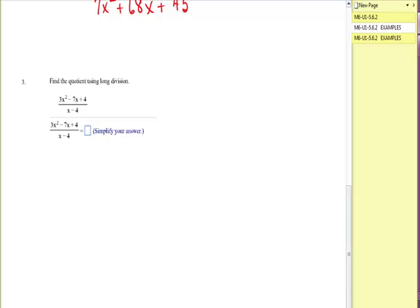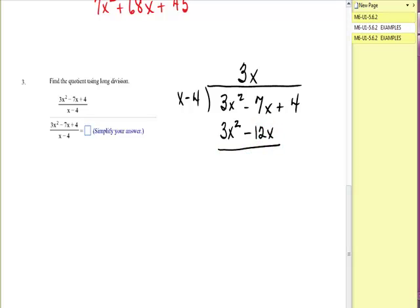All right, let's look at another one. I have x minus 4 into 3x squared minus 7x plus 4. What would you have to multiply x by to get 3x squared? You'd need to multiply it by 3 and an x. 3x times x is 3x squared. 3x times negative 4 is negative 12x. Change, change, change. The leading term should always cancel out. And this is going to give me a positive 5x. And I bring down a plus 4.